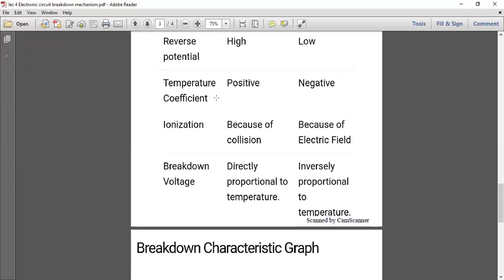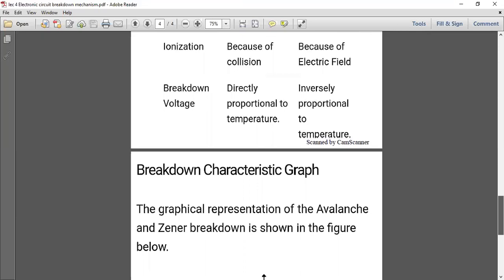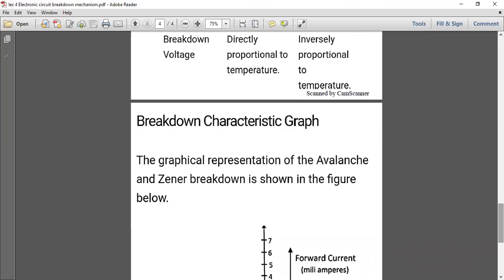Temperature coefficient: in avalanche, temperature coefficient is always positive, and in zener it is always negative. Ionization: in avalanche it is because of collision of holes and electrons, in zener it is because of electric field. Breakdown voltage: in avalanche, directly proportional to temperature; in zener, inversely proportional to temperature. So this is the major comparison and difference between zener and avalanche breakdown.